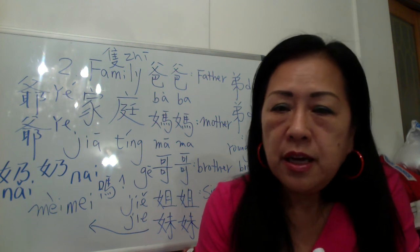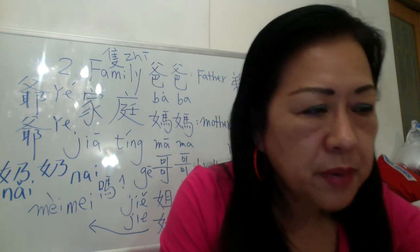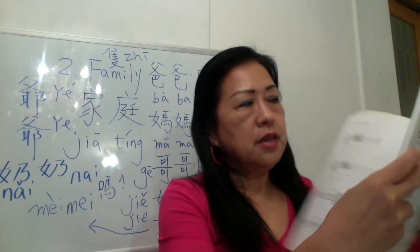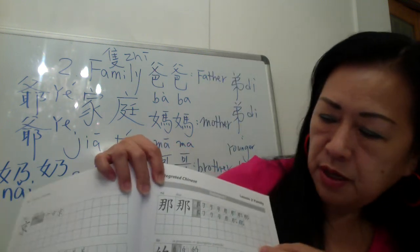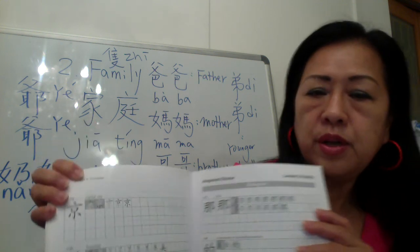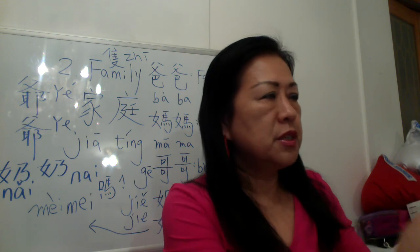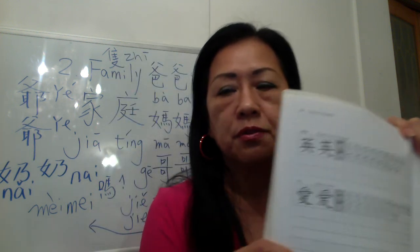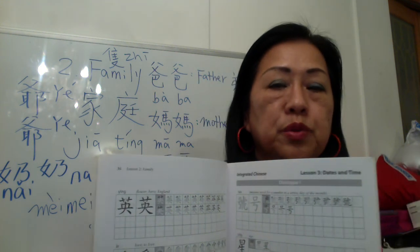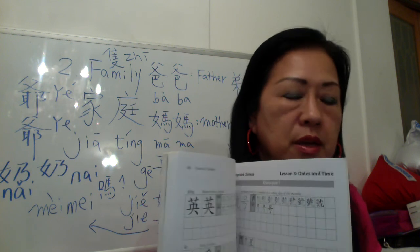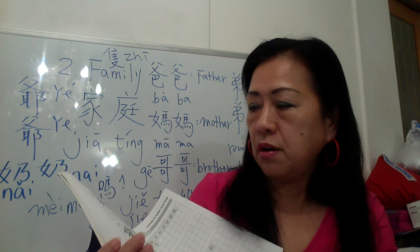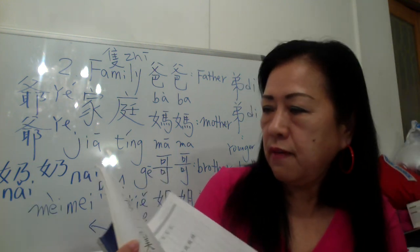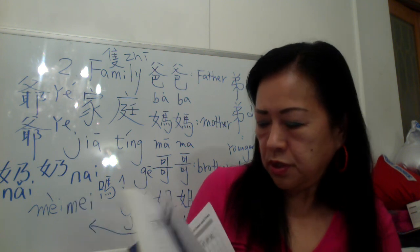So this is your practice — reading and measure words. Our homework is page 27 to 36 — Lesson 2 Family. You have to finish it over these two weeks. This week we talk about Dialogue 1 (pages 27–32); next week Dialogue 2. So by next week, finish pages 27 to 32.